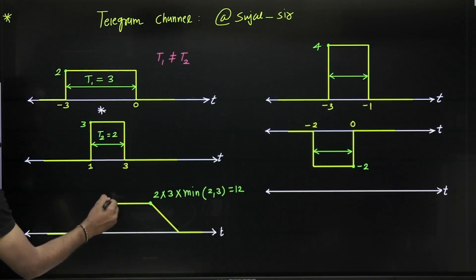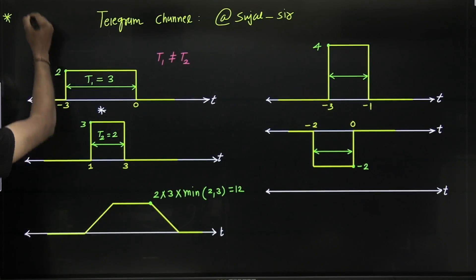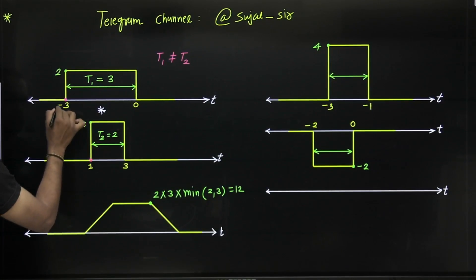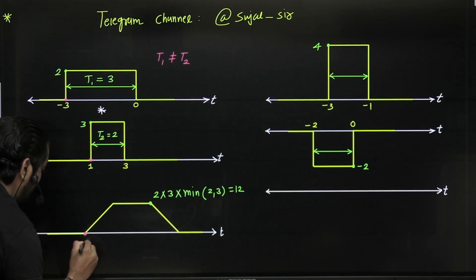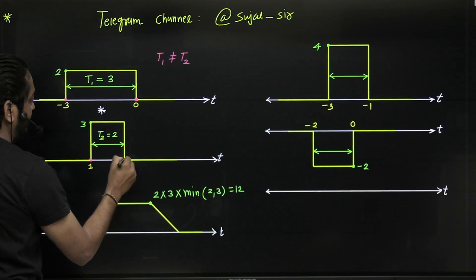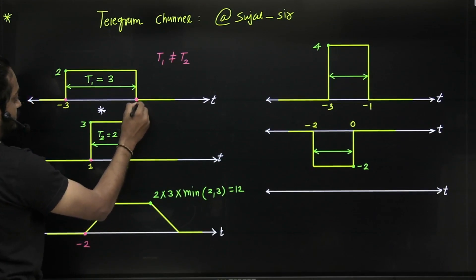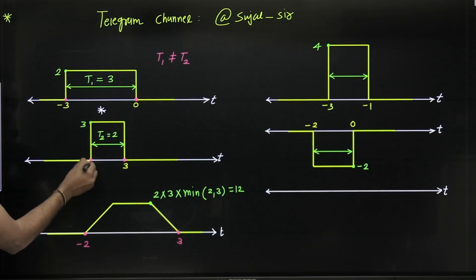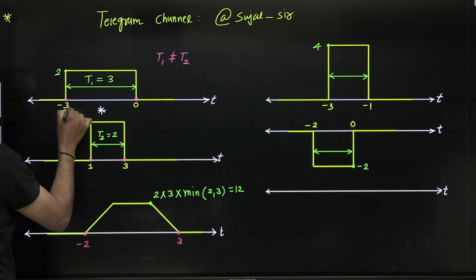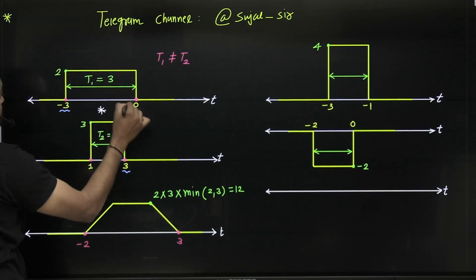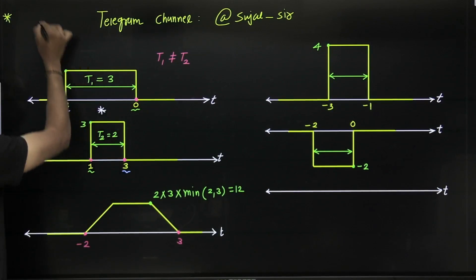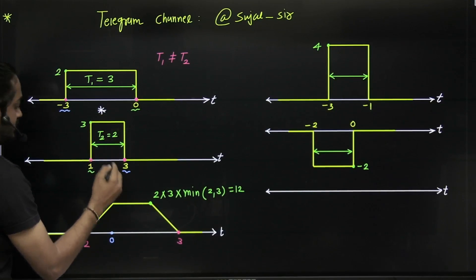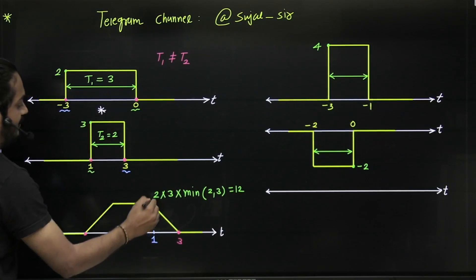So 2 × 3 = 6, and minimum is 2, giving a peak amplitude of 12. For the limits: the lower limit is the sum of the lower limits of both signals — that is minus 3 plus 1 equals minus 2. The upper limit is the sum of the upper limits — 0 plus 3 equals 3. The intermediate points are: lower limit plus upper limit gives minus 3 plus 3 equals 0, and upper limit plus lower limit gives 0 plus 1 equals 1.